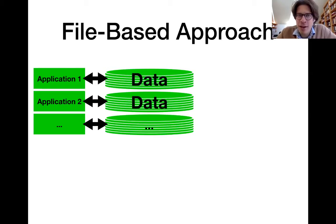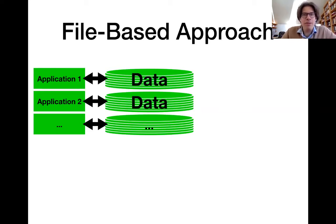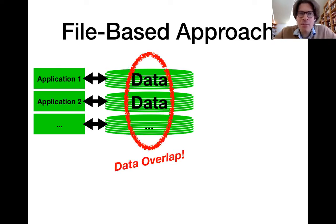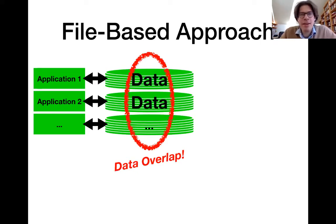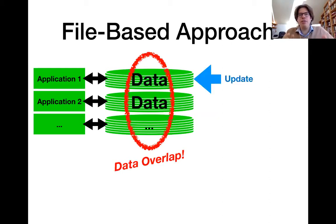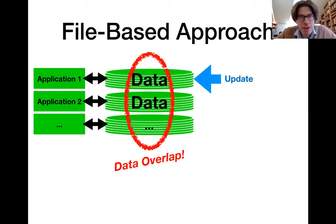For instance, here at Cornell, we might have multiple applications that all need to store data about students. And if they store the data independently, it means that we are wasting space because we are storing the same data redundantly. And what's even worse, if you are updating data like the address of a student, and if the data is stored redundantly, we might introduce inconsistencies between different copies of the data, which of course we want to avoid.